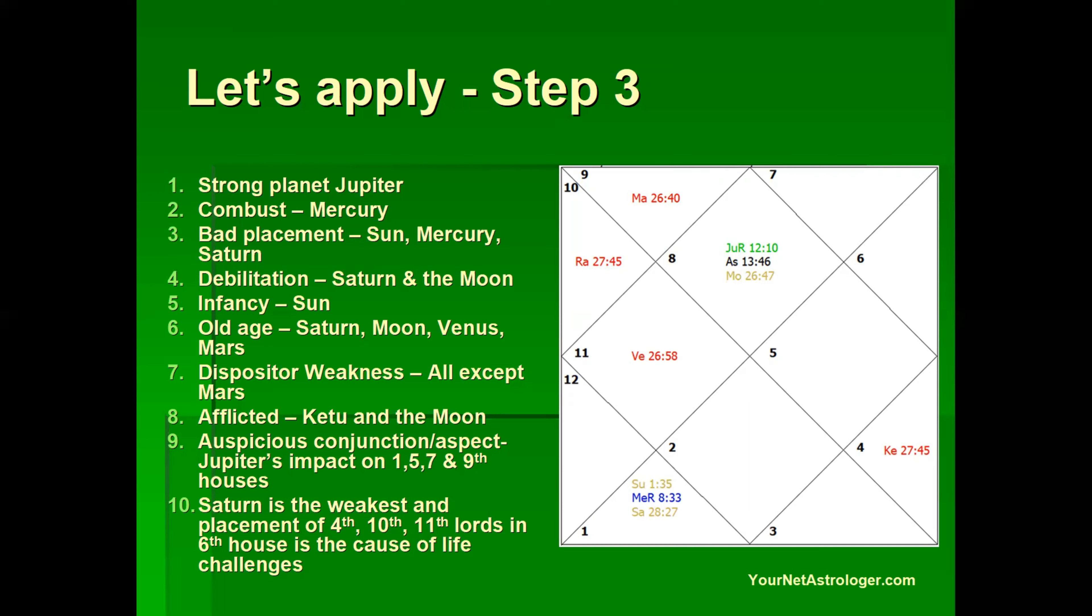When we analyze the afflictions we find that planet Moon is afflicted by fifth aspect of Ketu and planet Ketu itself is afflicted by the eighth aspect of Mars. So the auspicious conjunction we have seen of Jupiter to the MEP, and Saturn is the weakest planet in this chart. So now we move to step four.